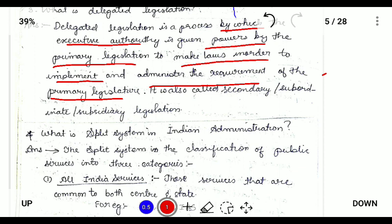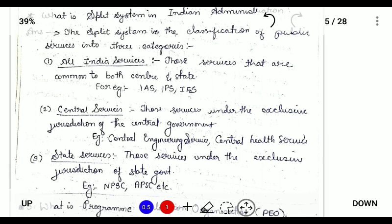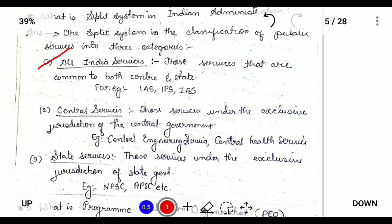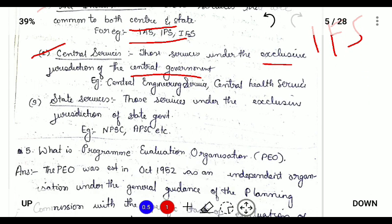What is the split system? The split system refers to the splitting of public services in India into three categories: All India Services, which are common to both Centre and State, consisting of IAS, IPS, and IFS; Central Services, which are under the exclusive jurisdiction of the central government, such as the Central Engineering Service and Central Health Service; and State Services, which are concerned with the state, such as UPSC, APPSC, OPSC, and GPSC.